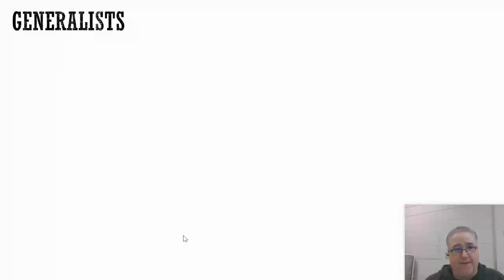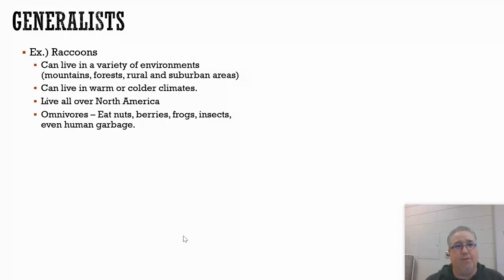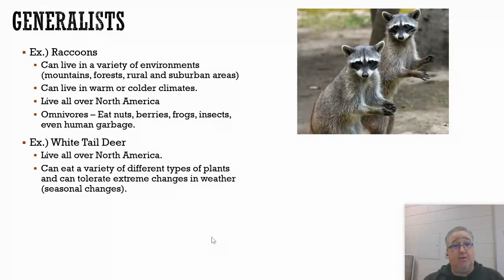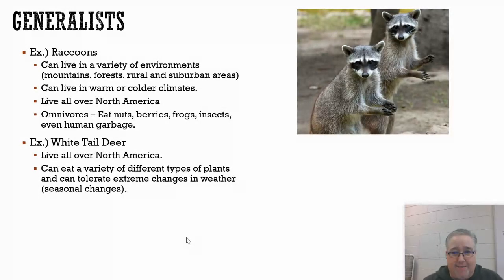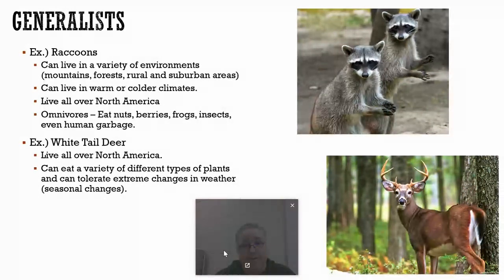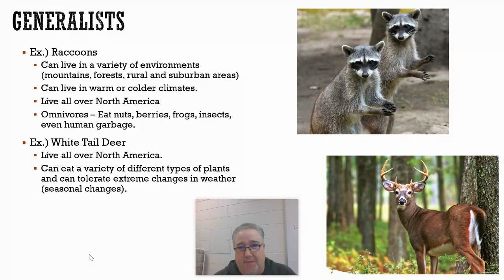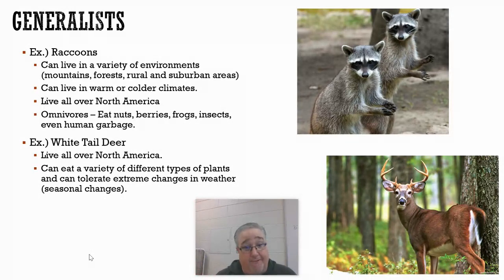Let's get into a couple of terms. One of them is called generalists. Generalists are organisms that typically can live in a variety of different environments. A really good example is a raccoon and white-tailed deer — two organisms we see living all over North America. They can live in warm weather and colder weather. We would consider them generalists. They have a broad niche — a fundamental niche — so they can tolerate a lot of changes to their environment.